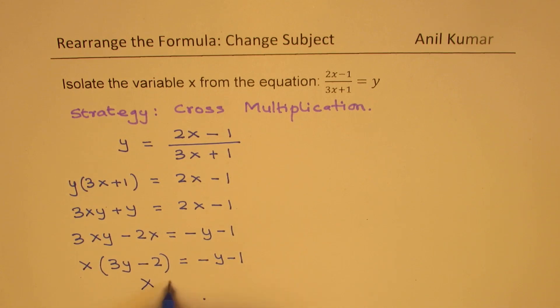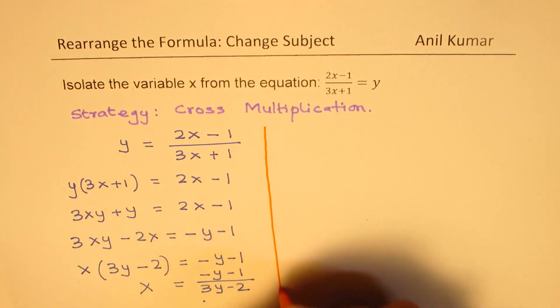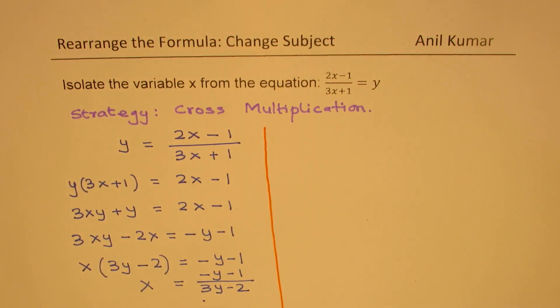x can now be written as minus y minus 1 over 3y minus 2. So, that is how you could apply this strategy of cross multiplication to change the subject or isolate the variable.